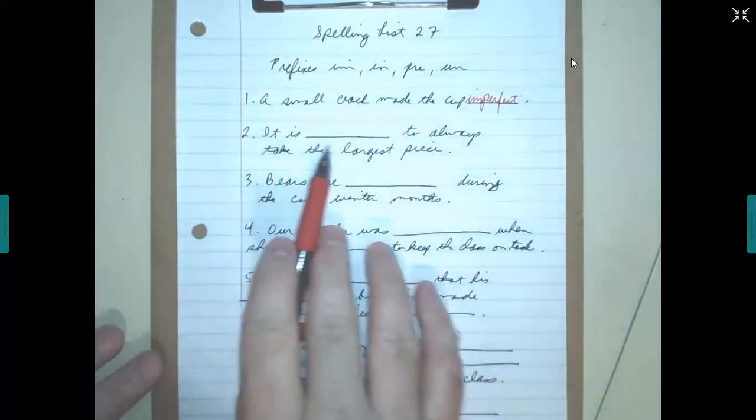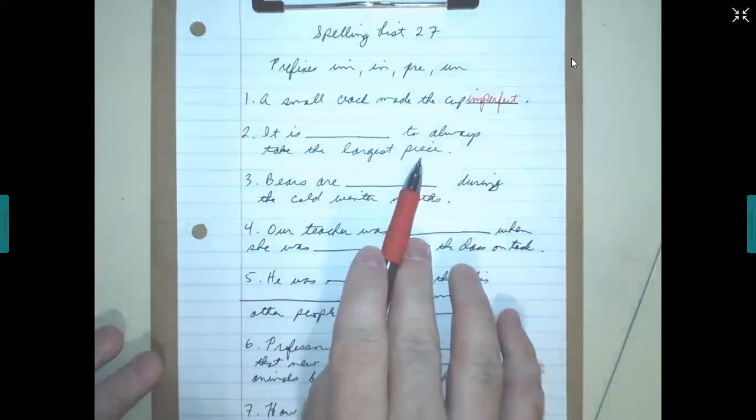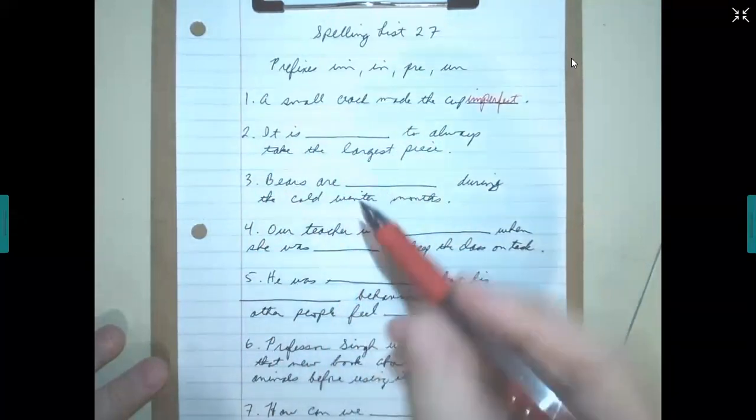Number two, it is what to always take the largest piece. So this one could be one of two, it could be either impolite or improper. Let's use impolite.